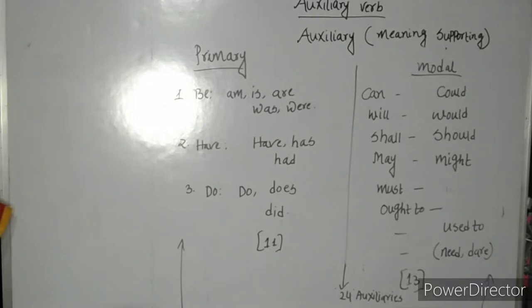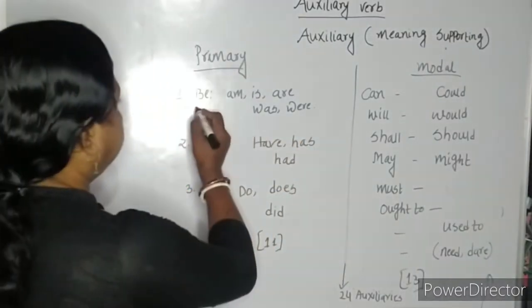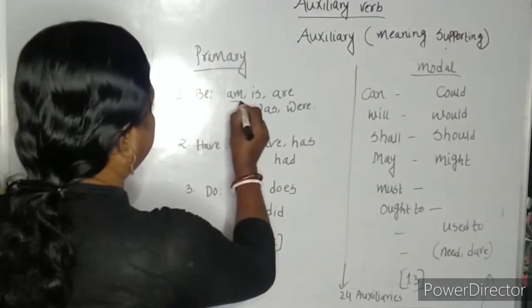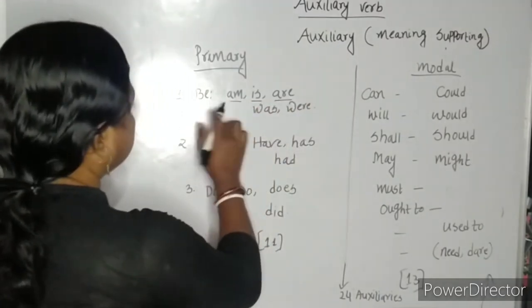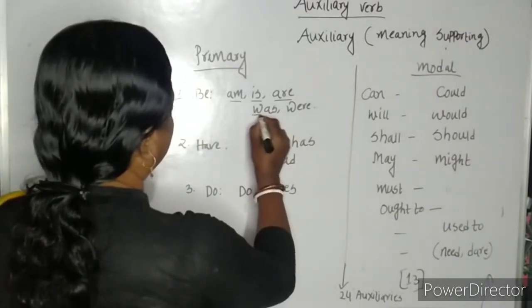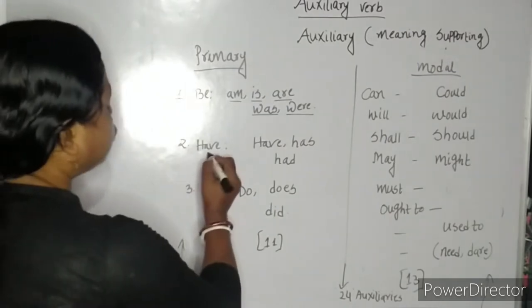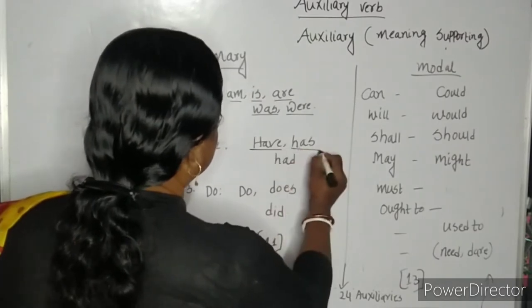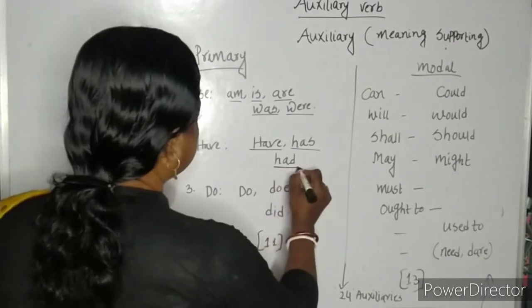The verb have has two forms in the present tense: have and has, and one form in past tense: had.